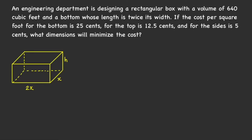Solving optimization problems may be divided into two steps. The first step is to write your objective function in terms of a single variable. The objective function is the quantity that you want to maximize or minimize — in this case, we want to minimize the cost. We should also determine the domain for our variable. The second step is to apply maximum and minimum principles to find the optimal value.